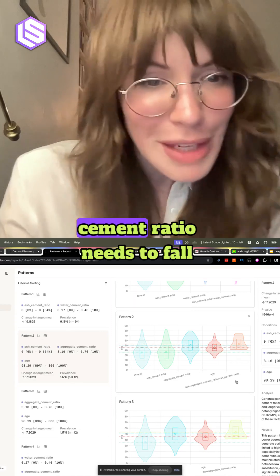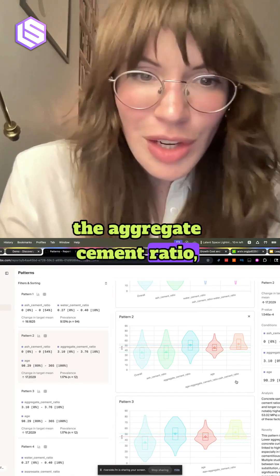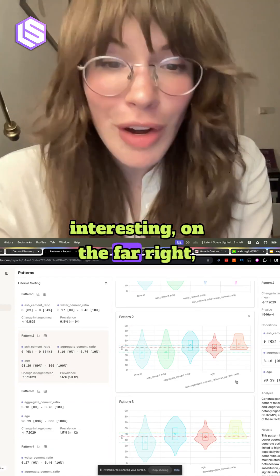Here, we've got the ash to cement ratio needs to fall within particular bounds, the aggregate cement ratio, the same. Likewise, the age. What we can see that's really interesting on the far right,